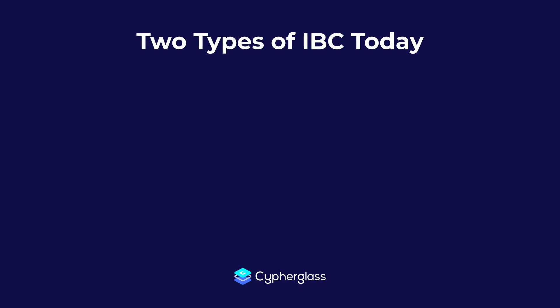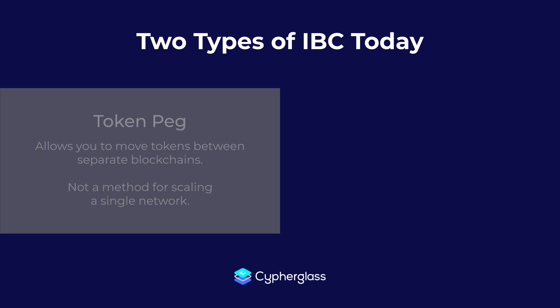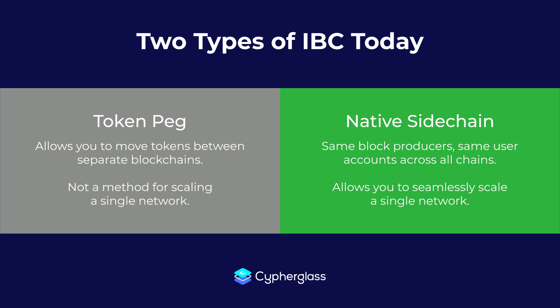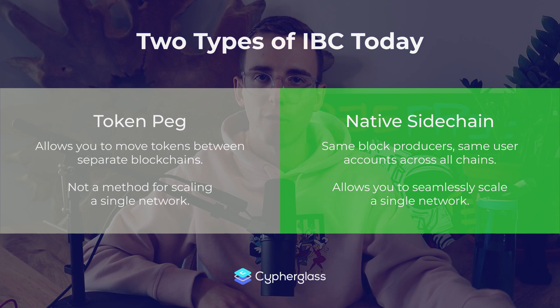I hope this video clarifies the two different types of IBC that are thrown around today. We have the simple peg swap, like BOSS has implemented and EBTC and these other coins have implemented, and then we have a more native sidechain IBC that's designed to scale the EOS mainnet and scale one existing chain, versus fragmenting it into a bunch of different forks. So when you hear IBC thrown around in Telegram or in a chat, be sure to ask what that person means by IBC, because generally people are using the same word with different meanings and definitions, and it can get a little confusing.